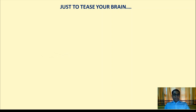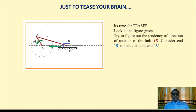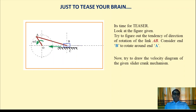As a practice exercise, consider a similar slider crank mechanism where O is the crank, AB is the connecting rod, and B is the slider supported on C. Determine the tendency of the direction of rotation of link AB, considering end B rotating around end A due to inertia, then draw the velocity diagram. If you can solve it, send your answer to the email provided in the description box below.